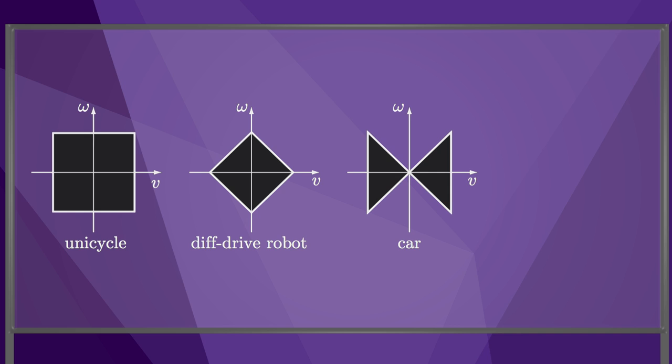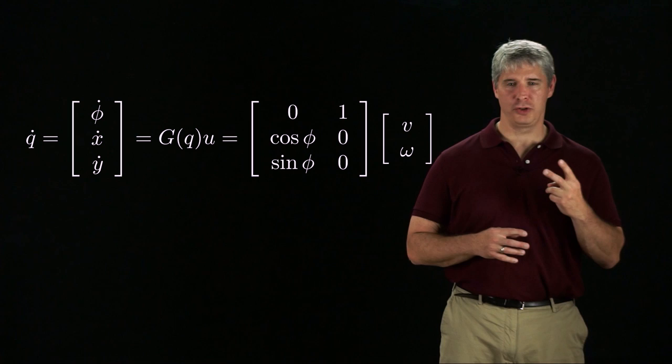The only difference among the robots is the bounds in their controls. For the unicycle, limits on the forward and turning speeds are independent, so the available controls are a box in the control space. A diff drive robot with bounds on the individual speeds of each wheel has a diamond of available controls. A car-like robot has a bow-tie shaped control set due to bounds on the turning radius and bounds on the forward-backward speed. Finally, a forward-only car has only half the bow-tie of controls.